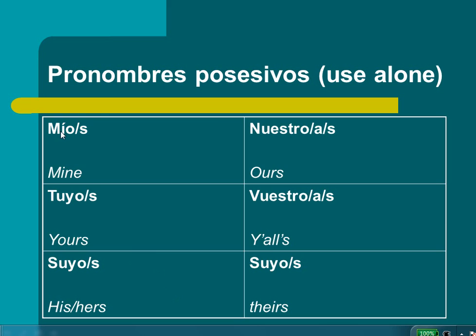Our first one is mío, or you have míos. Mío is mine, míos is mine when you have a plural number of objects — like 'they're my pens' versus 'they're mine' or 'it is mine,' which would be singular, as in 'it is my book.'